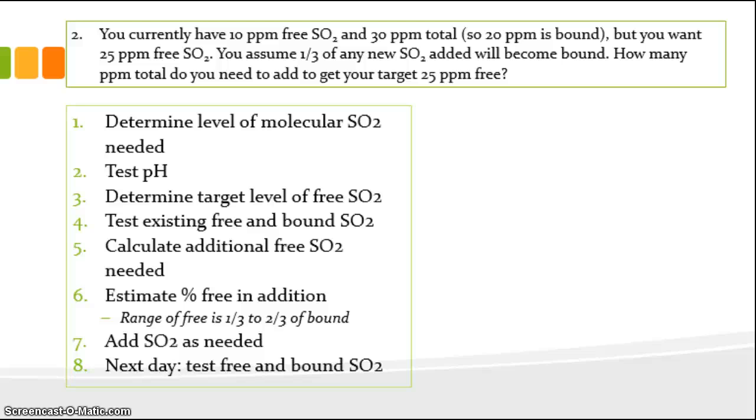So let's do the steps. So step one, the level of molecular SO2 needed. Well, in this case, this would be determining do we need 0.8 or 0.5. For purposes of problem two in the homework, we don't really care. Because what we're given is we're given the answer to step three, which is the target level of free SO2. And that target is given in the problem as 25 parts per million. So we don't really need to answer item one. Normally, we only answer item one in order to be able to get item three. And item three is given for us. So we can kind of jump right there. We don't even need to worry about pH in this case because, again, we just needed that in order to determine and solve and answer step three.